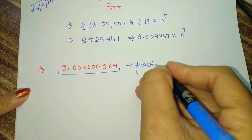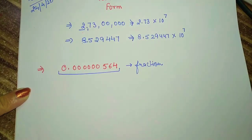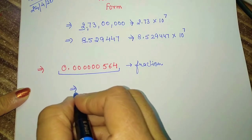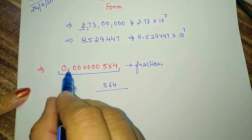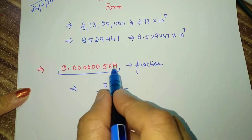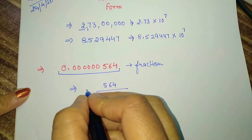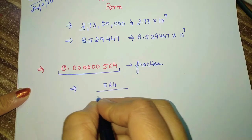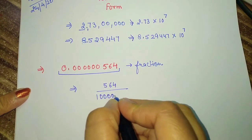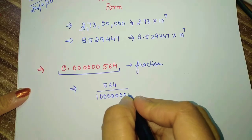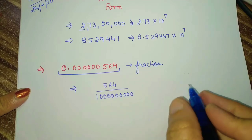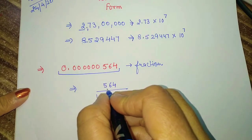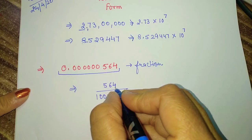So first, convert this decimal number into a fraction. When we convert to a fraction, we write 564 in the numerator. After the decimal, how many zeros? 9. So we write 1 followed by 9 zeros in the denominator: 1, 2, 3, 4, 5, 6, 7, 8, 9. Now we have written 1 after 9 zeros, and we have to convert this number also into standard form.